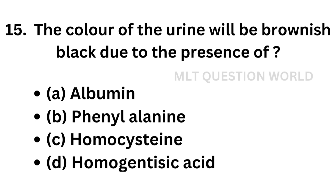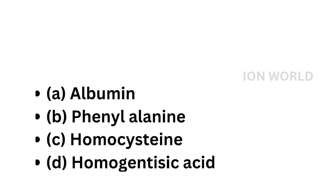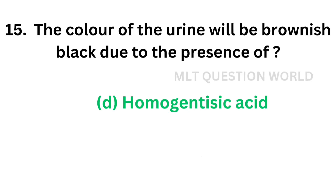Question number 15. The color of the urine will be brownish black due to the presence of: option A, Albumin; option B, Phenylalanine; option C, Homocysteine; option D, Homogentisic acid. The correct answer is option D, Homogentisic acid, and it is present in alkaptonuria.